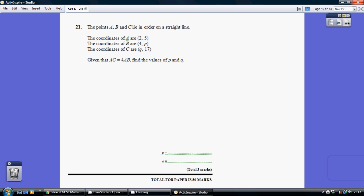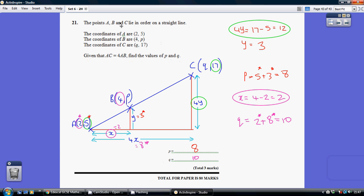Question 21. The points A, B and C lie in order on a straight line. So here we go A, B and C. We're told that the coordinates for A is 2, 5, B is 4 and P, and C is Q and 17.